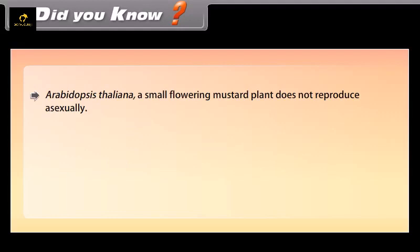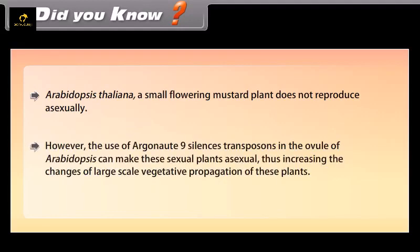Did you know? Arabidopsis thaliana is a small flowering mustard plant that does not reproduce asexually. However, the use of Argonaute 9 silences transposons in the ovule of Arabidopsis, which can make this sexual plant asexual, thus increasing the chances of large-scale vegetative propagation of these plants.